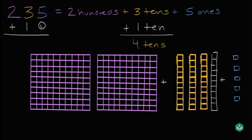And we can also show that by saying 4 10s. So we have 5 1s plus 0 1s. We're left with the same amount of 1s, 5 1s. 2 100s stay the same. We're not adding any 100s to that. So plus 0 100s, you still end up with 2. So 2 100s plus 4 10s plus 5 1s gets you to 245. So 2 100s plus 0 100s equals 2 100s. 3 10s plus 1 ten equals 4 10s. And 5 1s plus 0 1s equals 5 1s.